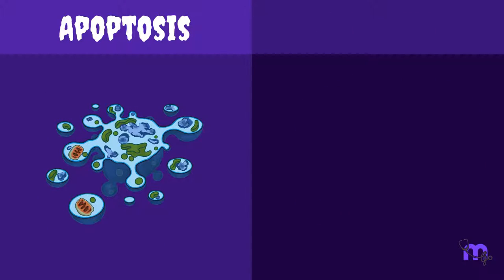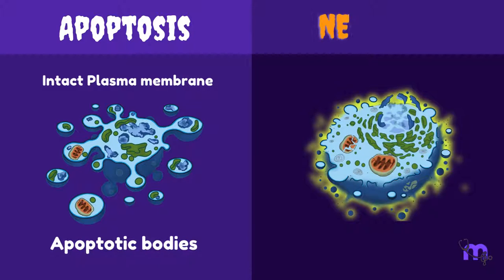The plasma membrane of an apoptotic cell is intact but only shows altered structure to form apoptotic bodies. The plasma membrane of a necrotic cell is completely disintegrated.